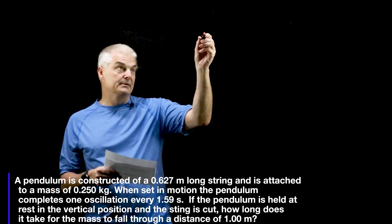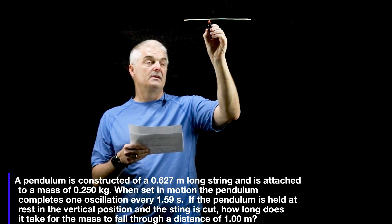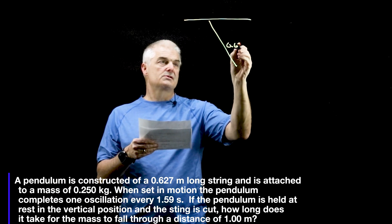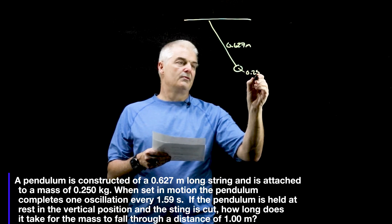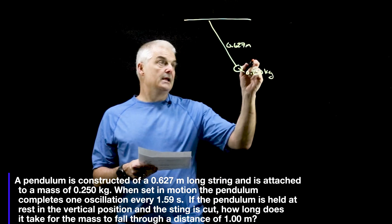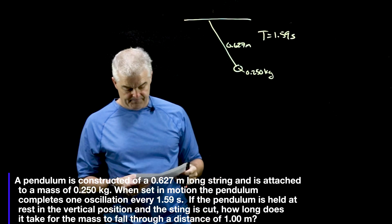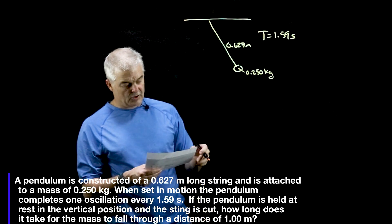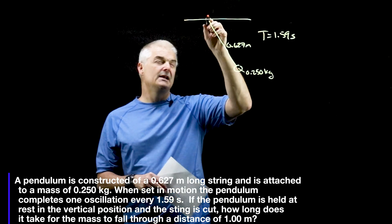We've got a pendulum again. And it's 0.627 meters. And this is 0.250 kilogram bob. And t equals 1.59 seconds. If the pendulum is held at the vertical position, the string is cut.